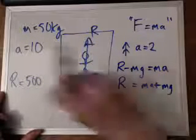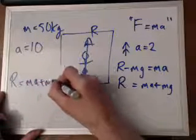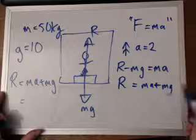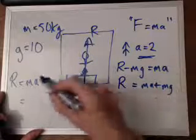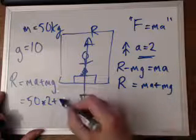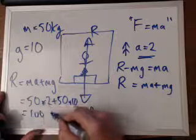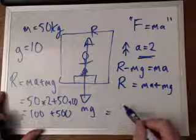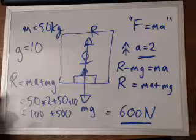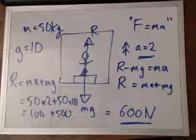Let me correct that. So R equals mA plus mg. Her mass is 50, acceleration is 2, gravity is 10. So mA is 50 times 2, which is 100, plus mg which is 50 times 10, which is 500. So R equals 100 plus 500, which equals 600 newtons. So the reaction force is 600 newtons. She would actually feel like she was 60 kilograms.